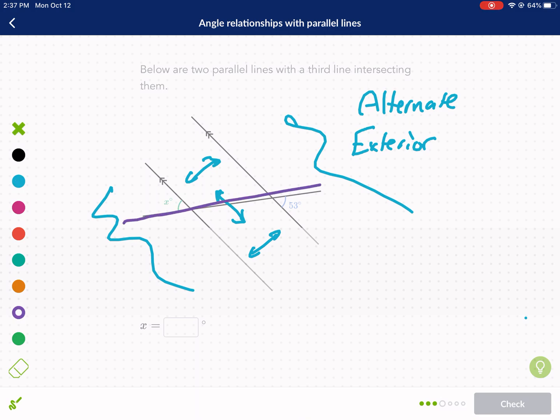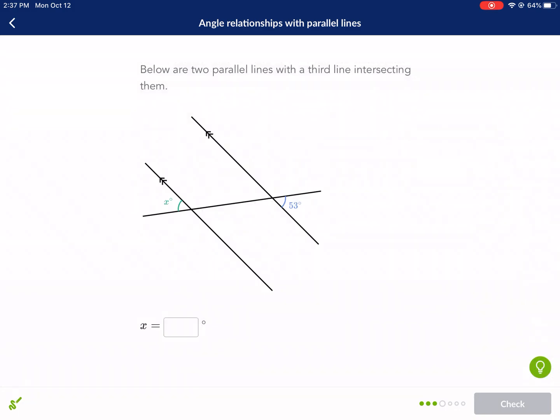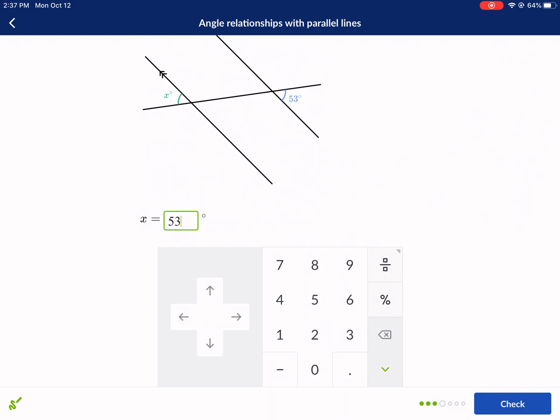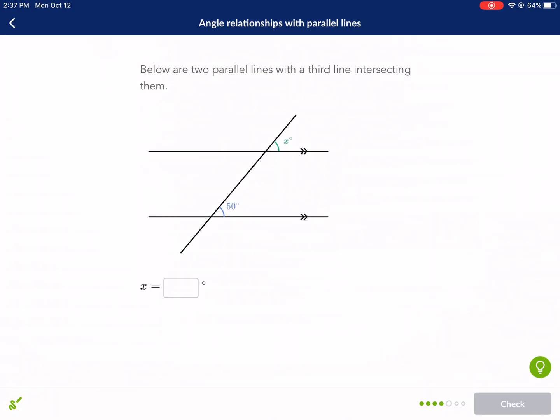Let me highlight that in just a moment. So here's our transversal. They're on the alternate sides. So these are alternate exterior angles. They too are going to be equal to each other. So 53 degrees.